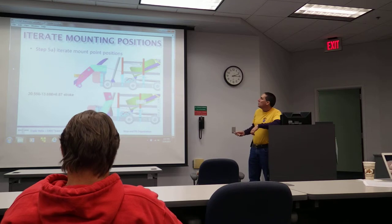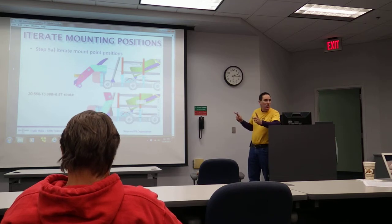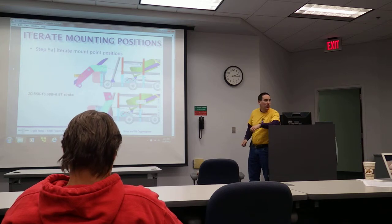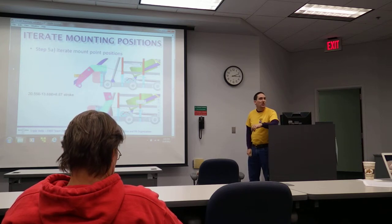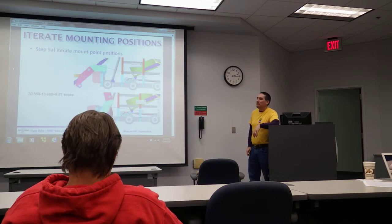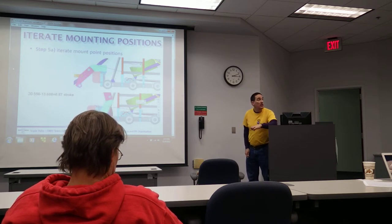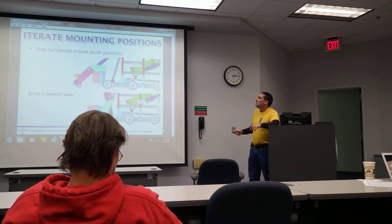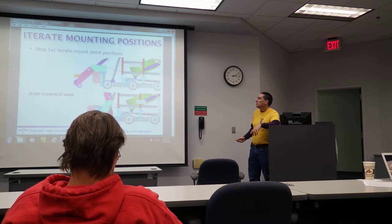You come back and compare that overall extended length to what you've actually got room for. If it fits in there and you picked your points right the first time, great. Oftentimes you don't — but even if you can find an off-the-shelf cylinder that will fit, by manipulating these mounting points, sometimes very slightly, you can drastically reduce the amount of stroke that you need.